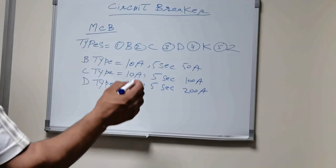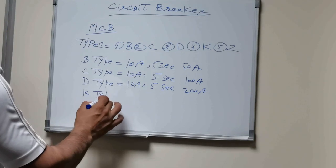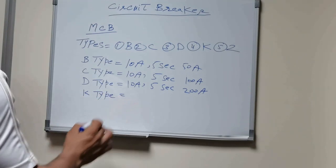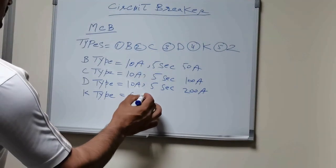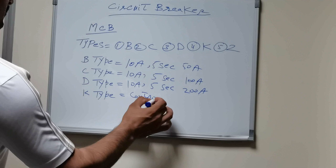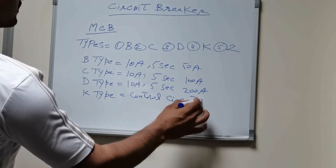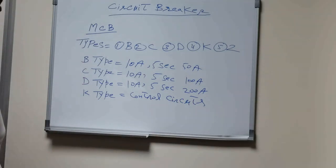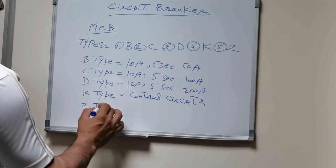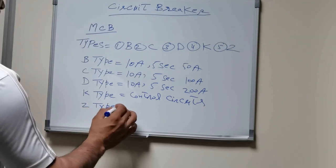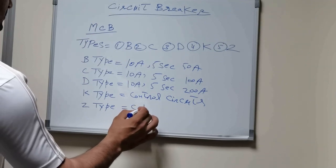Now we will come to Type K. Type K basically we use for our control circuits, like very low amp circuits. And Type Z is used for cable safety.